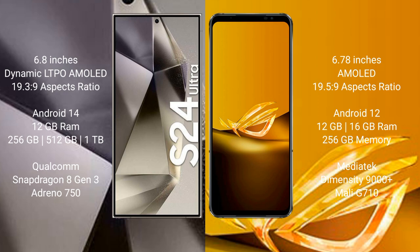Samsung Galaxy S24 Ultra comes with 12GB RAM and 256GB or 1TB internal storage. It is powered by the Qualcomm Snapdragon 8 Gen 3 processor.